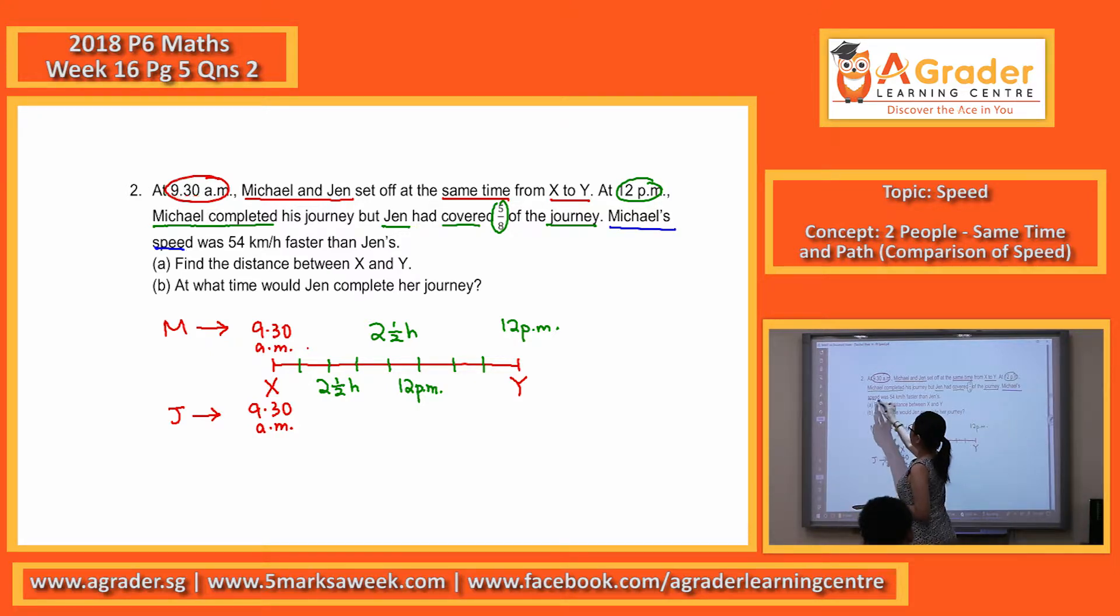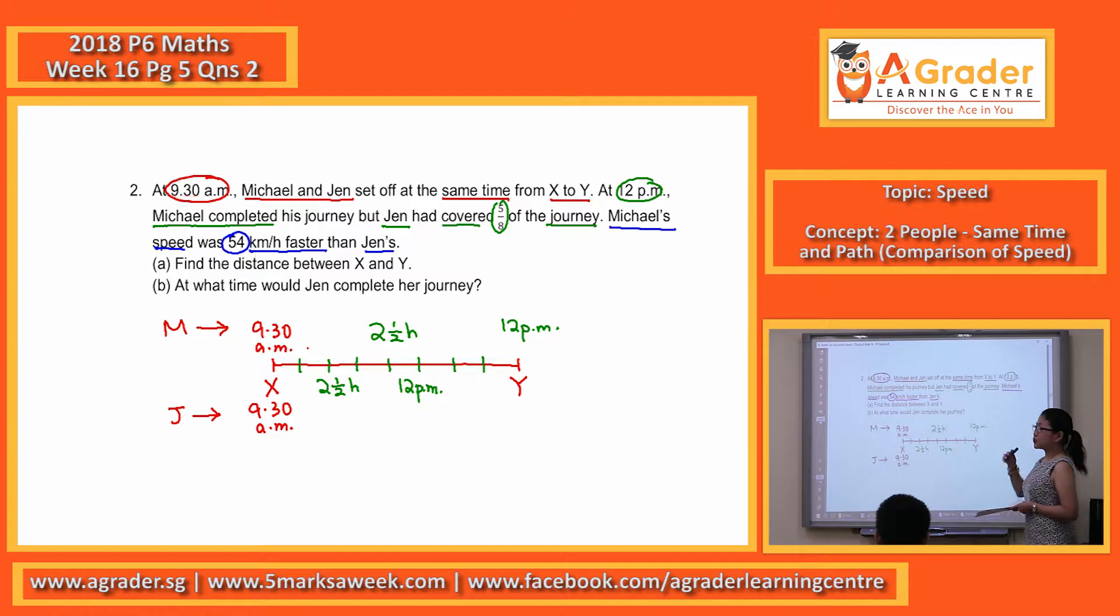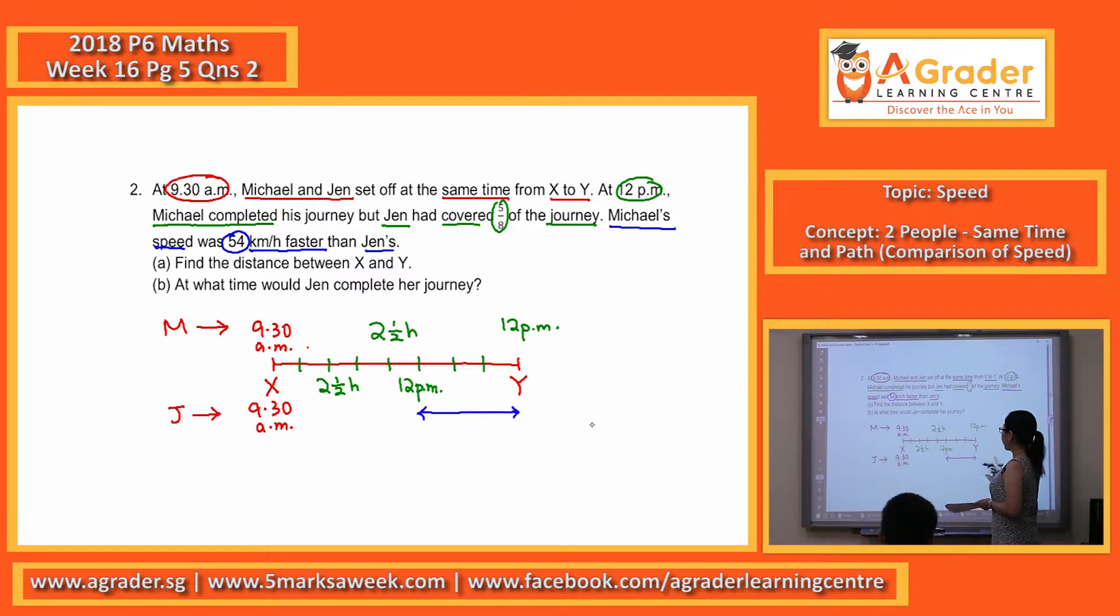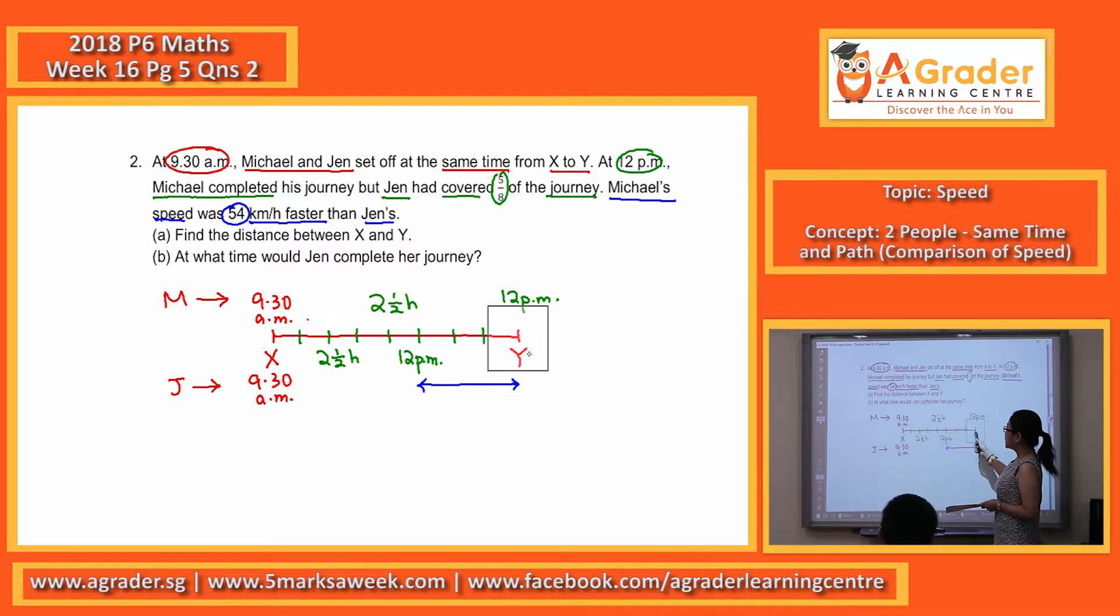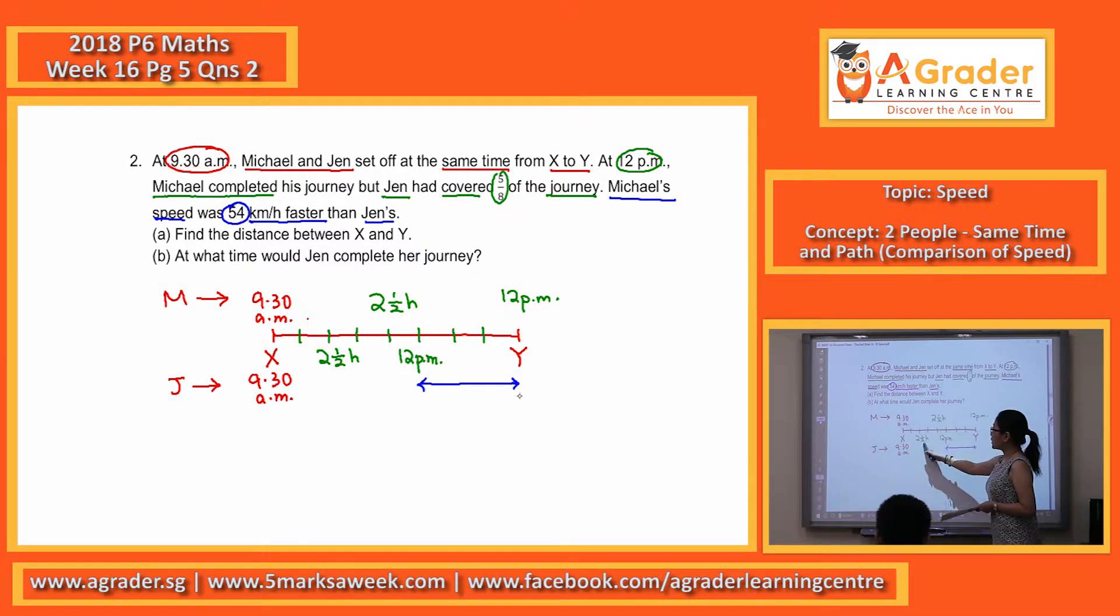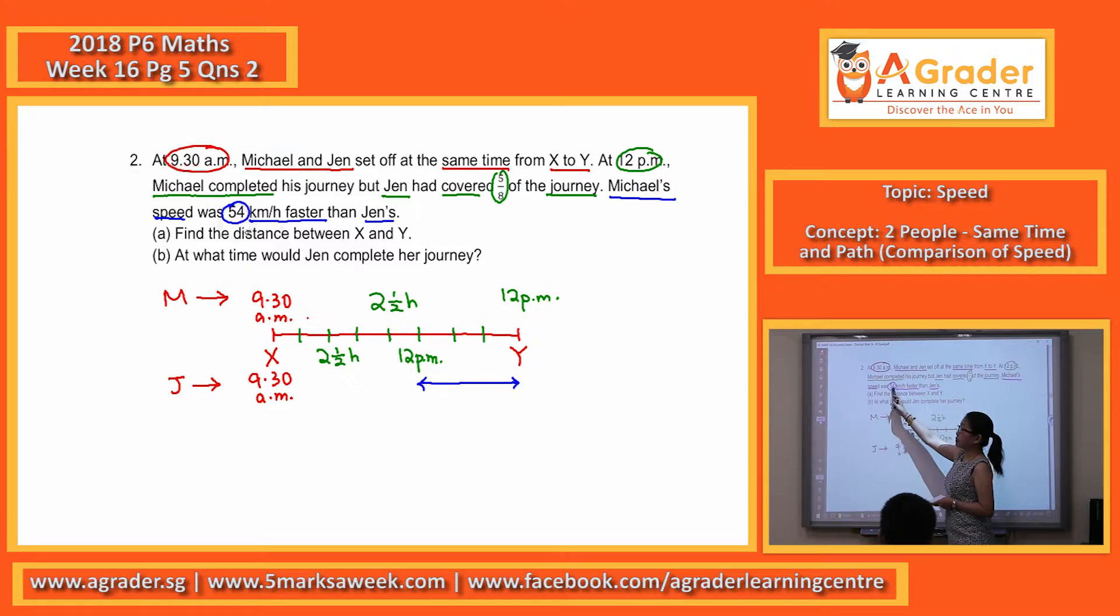Michael's speed, 54 km per hour faster than Jen. So one hour, Michael will travel 54 km ahead of Jen. So this part that is ahead, when Michael reached Y, it means that for these 2.5 hours, if you multiply by 54,